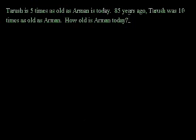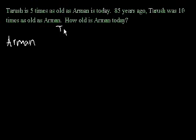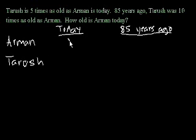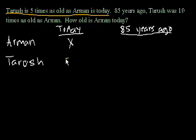Let's see if we can tackle this — it's quite an interesting problem. I think it might be useful to do one of those charts like we did in the first video presentation. We're trying to solve for how old is Armand today, so let's say Armand equals x. We're going to have two time columns: today and 85 years ago. Armand today is x. Since Tharoosh is five times as old as Armand today, Tharoosh today is 5x.